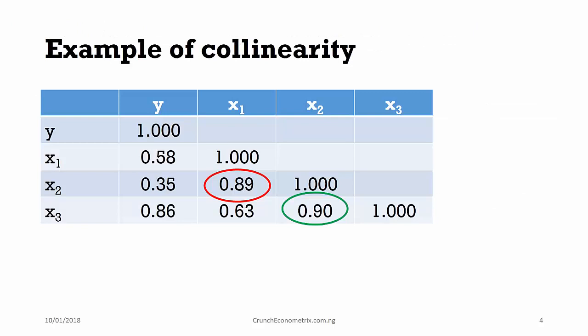An example of collinearity is what we have on the screen. We have a y-dependent variable and three explanatory variables. The 0.89 indicates the correlation coefficient between the second regressor and the first regressor.